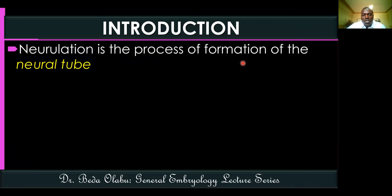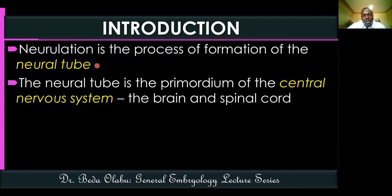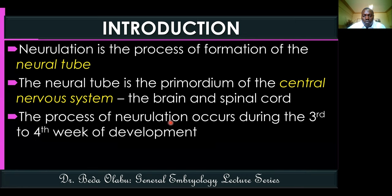Neurulation is the process of formation of the neural tube. The neural tube is the primordium of the central nervous system - the brain and the spinal cord. This process takes place starting from the third week of development and continues into the fourth week. It begins at around day 17 after conception, just after the primitive streak has formed and gastrulation has taken place.